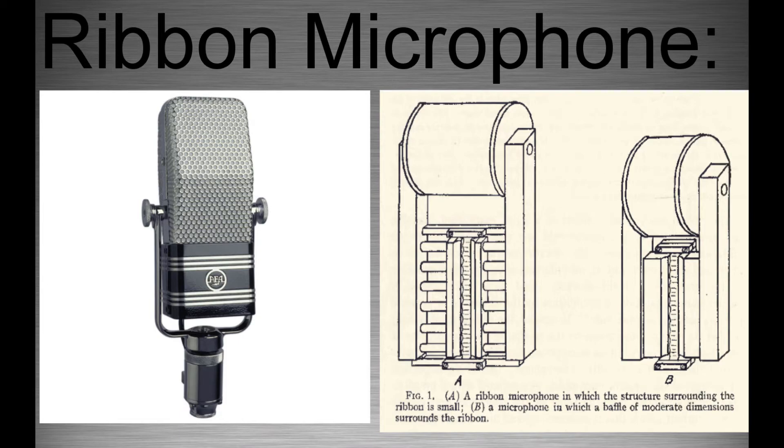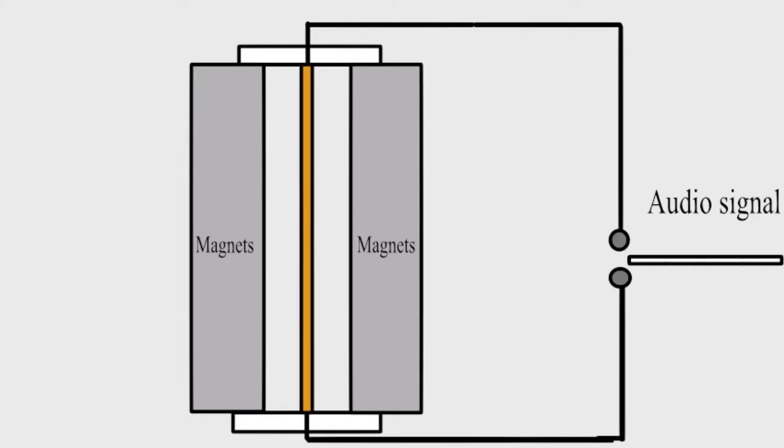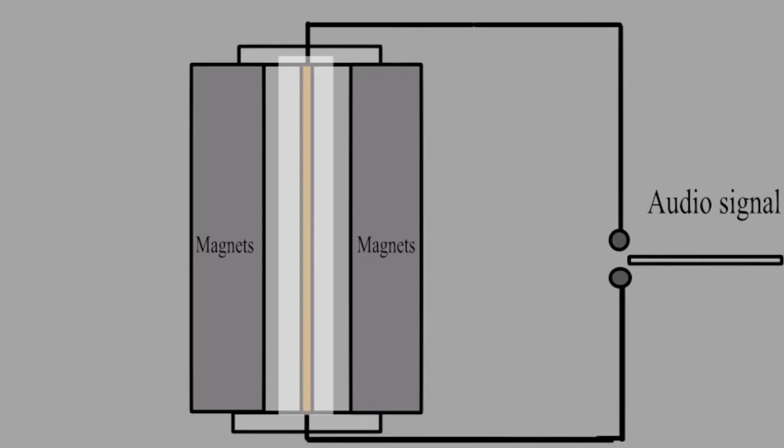Ribbon microphone. A ribbon microphone works pretty similar to a moving coil microphone, but instead of a moving coil, you have a metal plate that looks like a ribbon placed between two magnets.